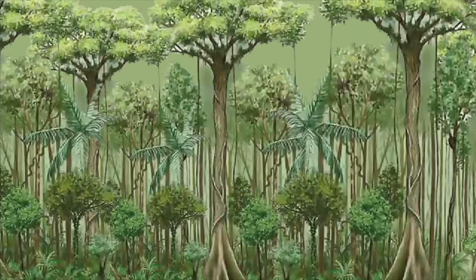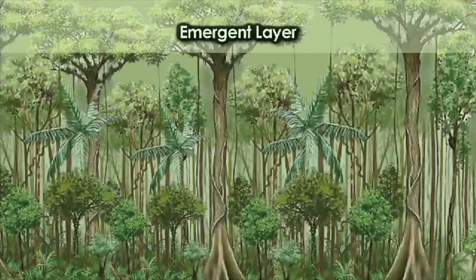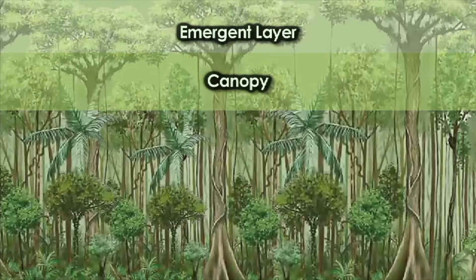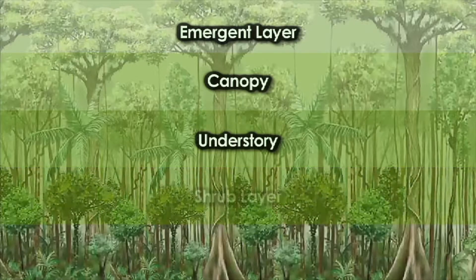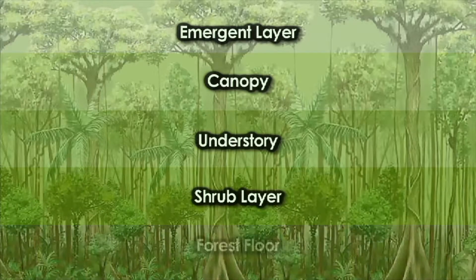Scientists divide the tropical rainforest into five layers, from the top down. They are the emergent layer, the canopy, the understory, the shrub layer, and the forest floor.